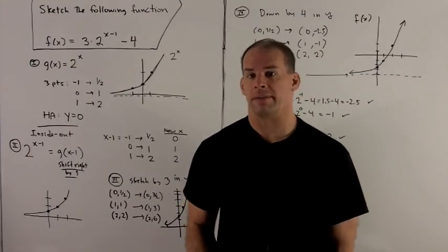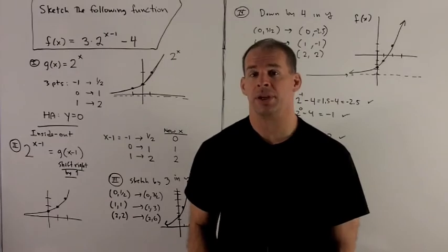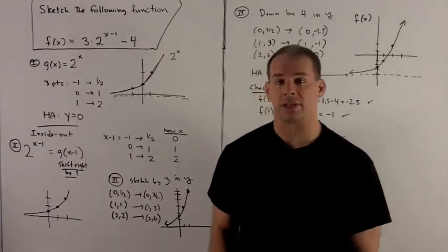Sketch the following function: f of x equal to 3 times 2 to the x minus 1 power minus 4.